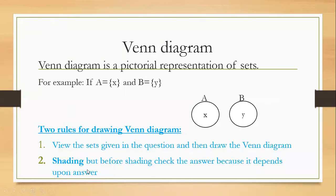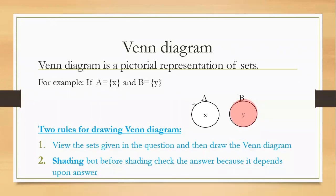Rule number two is shading. For example, if after solving the question we get the answer X, we shade only the X part. If we get the answer Y, we shade only Y. But if we get the answer X and Y, we shade the whole Venn diagram. Shading depends upon the answer.